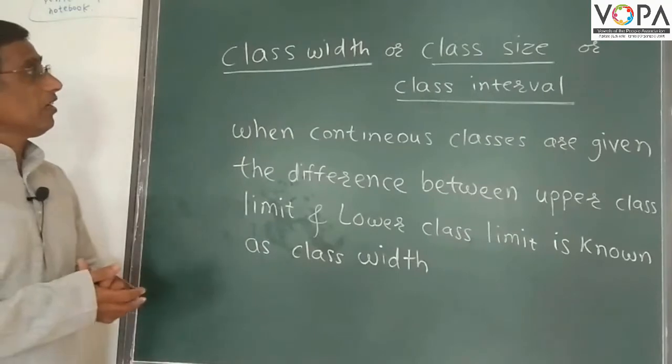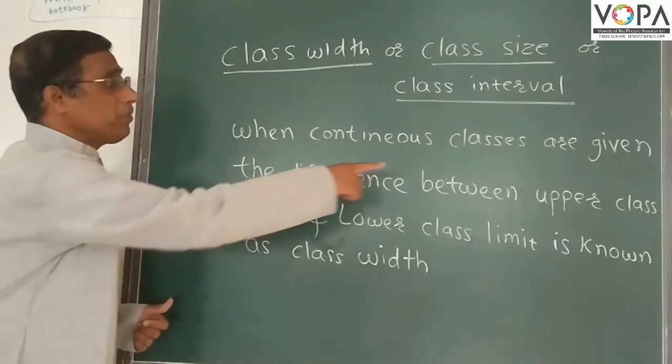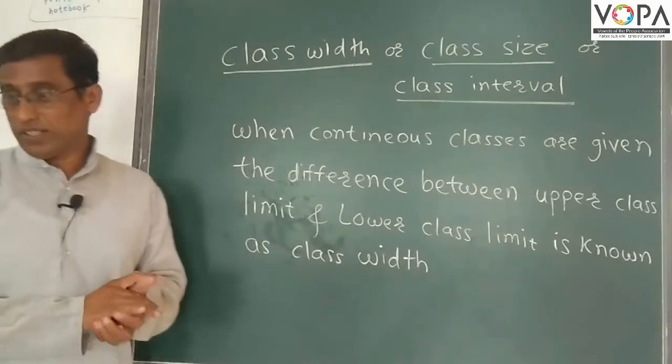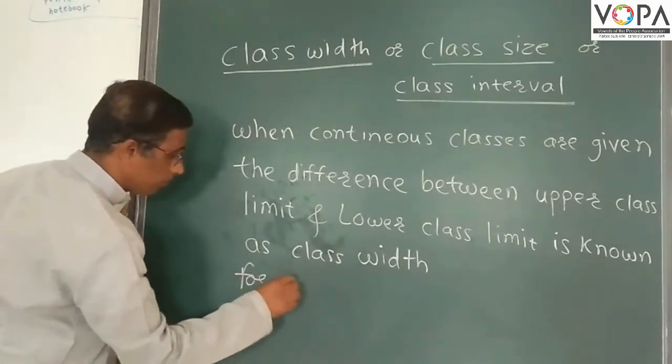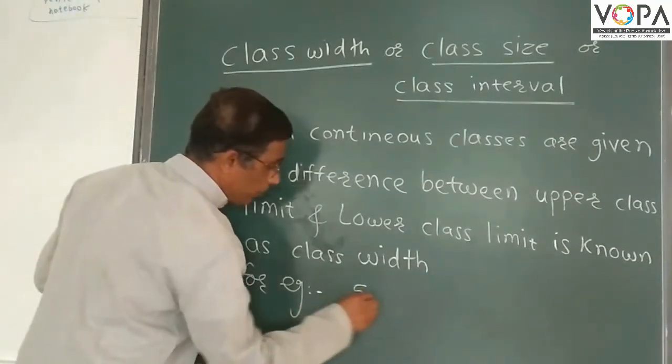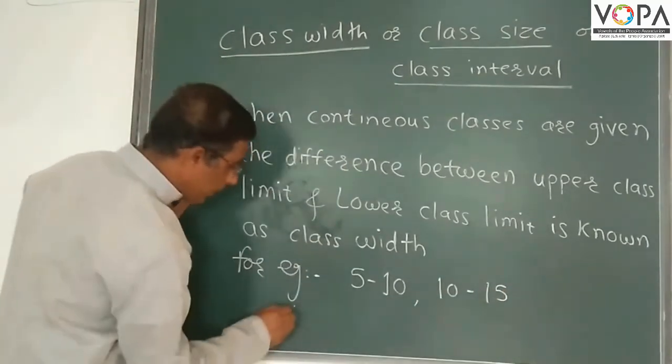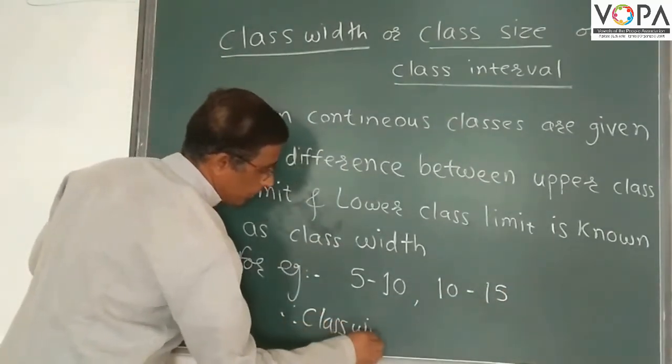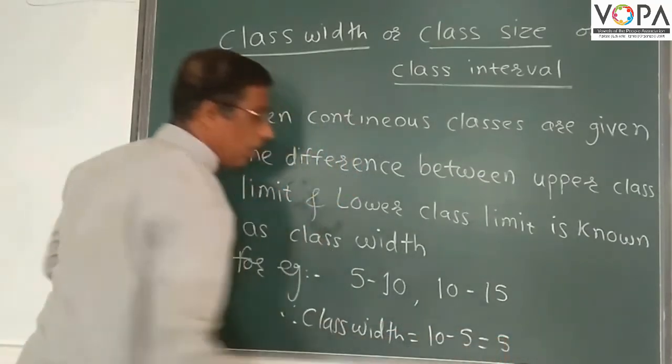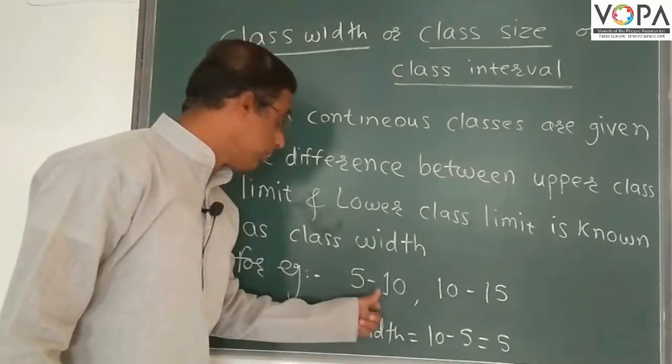Class width or class size or class interval. When continuous classes are given, the difference between upper class limit and lower class limit is known as class width. For example, suppose we have a given class 5 to 10, 10 to 15. Therefore class width is equal to 10 minus 5 is equal to 5 or 15 minus 10 is equal to 5. This is the class width of the class.